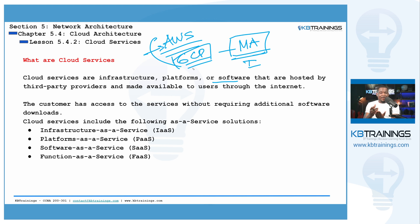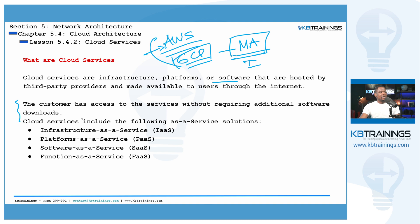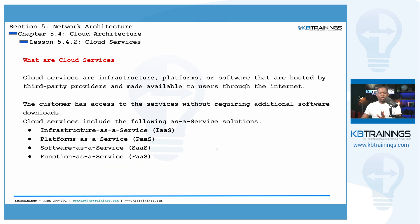These big three providers offer services that users or companies can access using the internet. Companies don't have to worry about the underlying infrastructure running those services because that is provided by the cloud service provider. The customer has access to the services without any additional software downloads. The main service types are: Infrastructure as a Service, Platform as a Service, Software as a Service, and Functions as a Service.